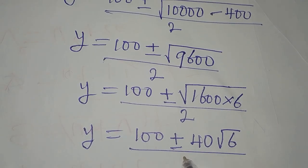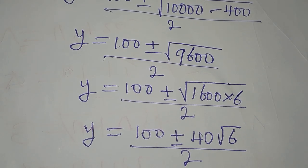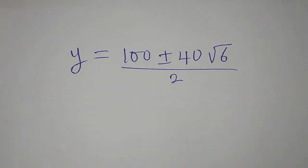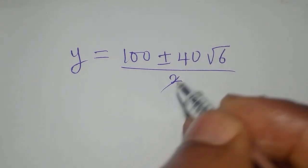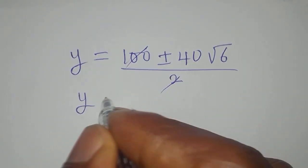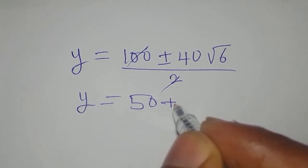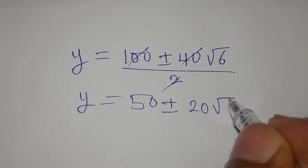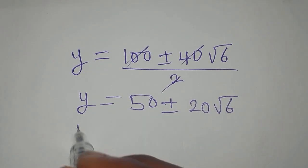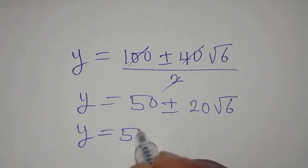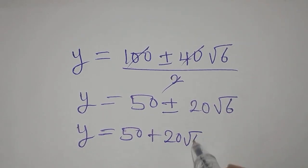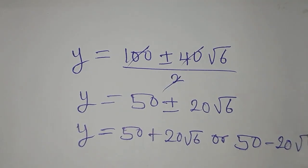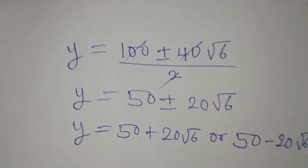This is all over 2. From here, 2 can divide into 40, so y equals 50 plus or minus 20 root 6. That gives us y equals 50 plus 20 root 6, or y equals 50 minus 20 root 6.